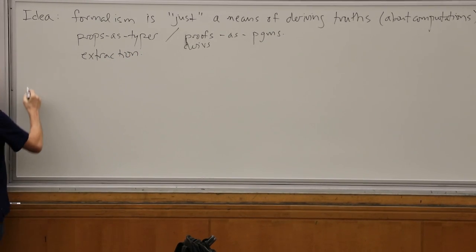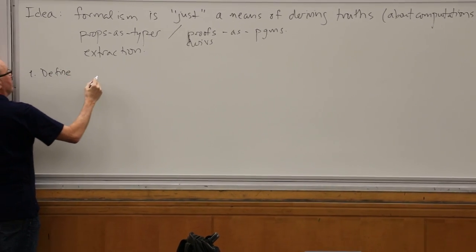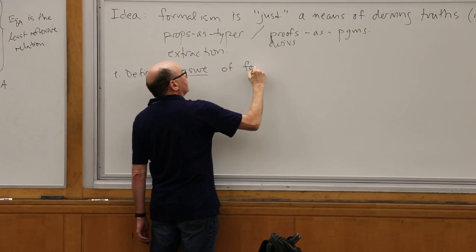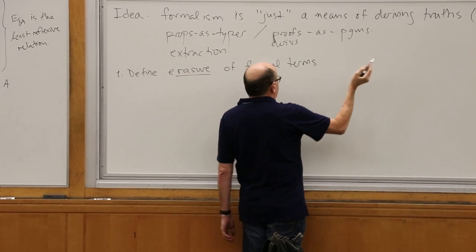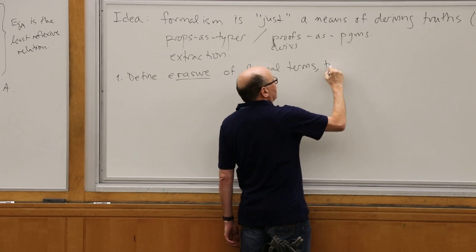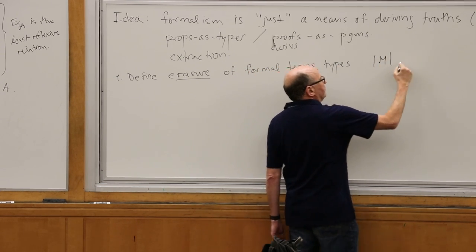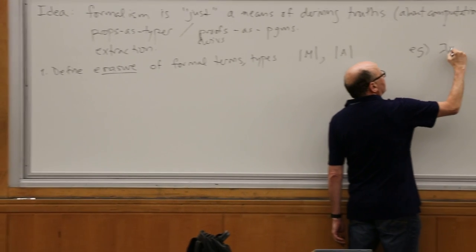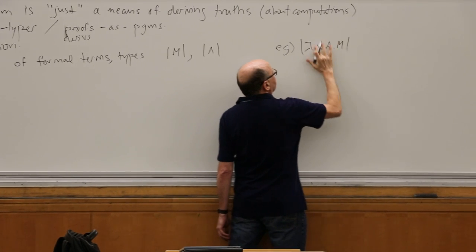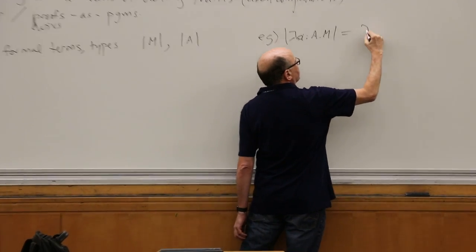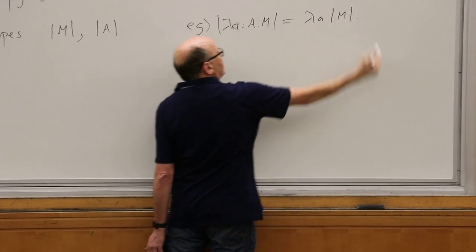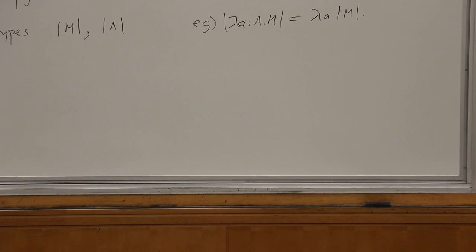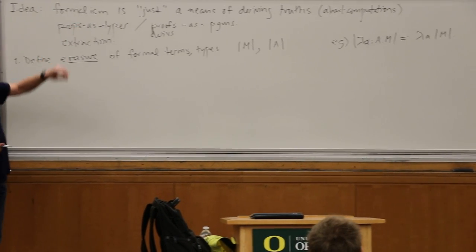The way you do extraction is you define a notion of erasure of formal terms or formal proofs. You get rid of the stuff you don't need at runtime. For example, if I want to run this code, I might define it by erasing all extraneous type information that's presumably there only to satisfy the decidability criterion. That's what you do — it could be more or less trivial. The most trivial thing is just erasing irrelevant type decorations, because the operational semantics, the execution model, doesn't require that information in order to run.